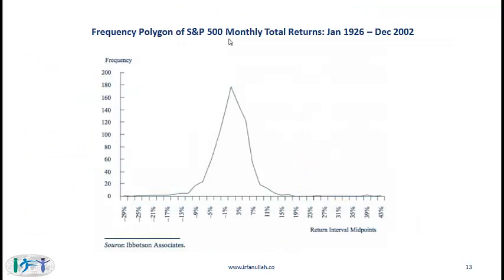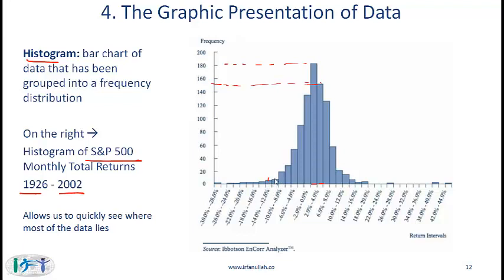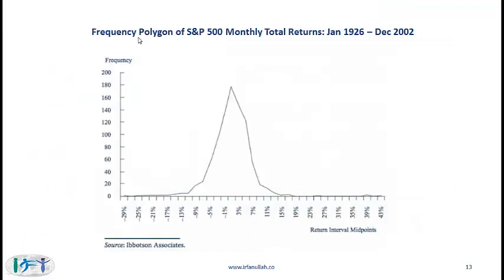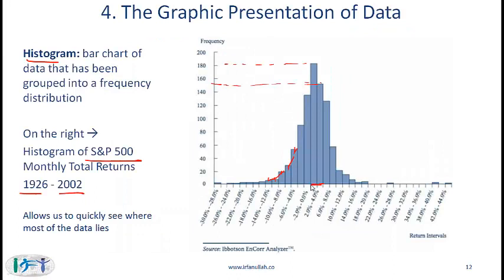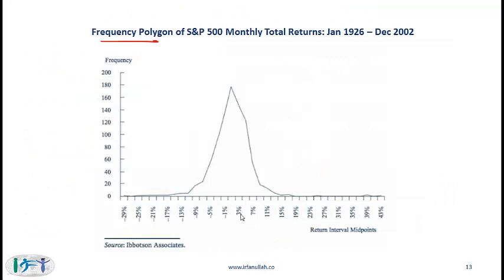A frequency polygon simply takes the midpoints of the histogram bars and connects those points. If you take this histogram and the midpoints for each one of these bars and connect those midpoints, you have what is called a frequency polygon. The x-axis will have the midpoint of each interval — for the 2% to 4% interval, instead of giving the whole range, we specify the midpoint which is 3%, and the frequency is shown at that midpoint, which is 180.